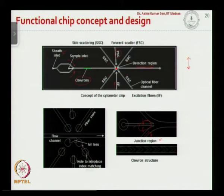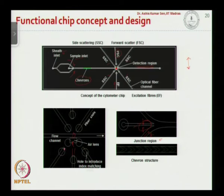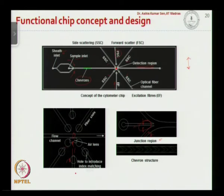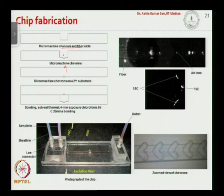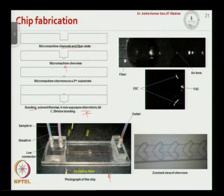An air lens — a machined pocket — collimates the beam from the fiber going into the detection region. Index-matching liquid is introduced to fill the gap between optical fiber ends and the fiber slots. The chip was fabricated using micro-milling and bonding: channels, fiber slots, and chevron structures were micro-machined, and the two wafers were bonded using solvent bonding with chloroform.